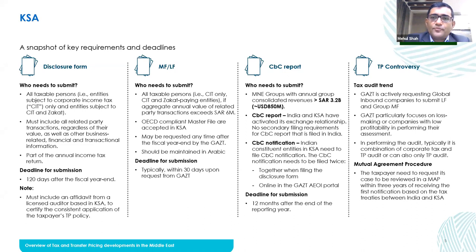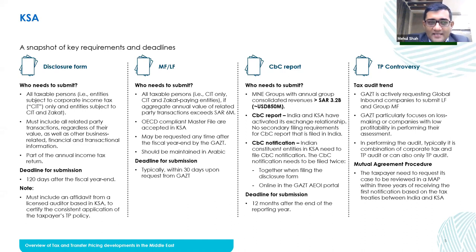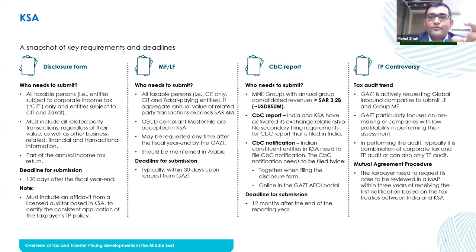The mutual agreement procedure program has been activated. So if there is an adjustment at one end, a taxpayer can resort to a mutual agreement procedure program. The treaty between India and KSA will be looked into in terms of the timeline for filing of the mutual agreement procedure. It's a defined timeline and you have to file within that timeline to avail the benefit. The idea is that there should not be any double taxation.